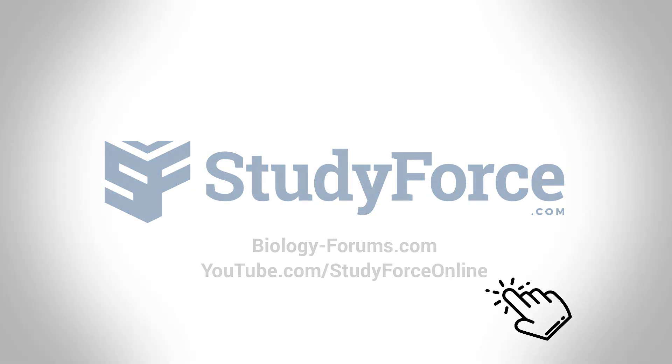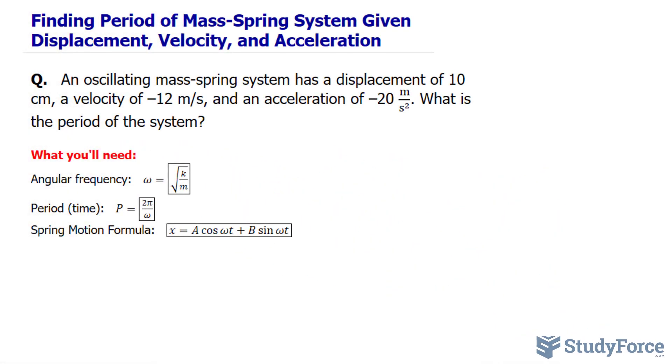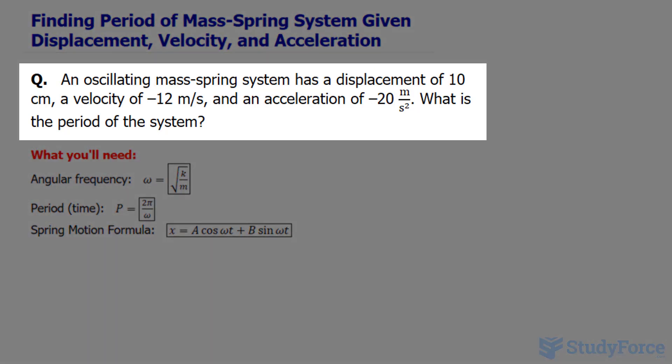In this lesson, I'll show you how to find the period of a mass-spring system when given the displacement, velocity, and acceleration. The question reads: an oscillating mass-spring system has a displacement of 10 centimeters, a velocity of negative 12 meters per second, and an acceleration of negative 20 meters per second squared. What is the period of the system?